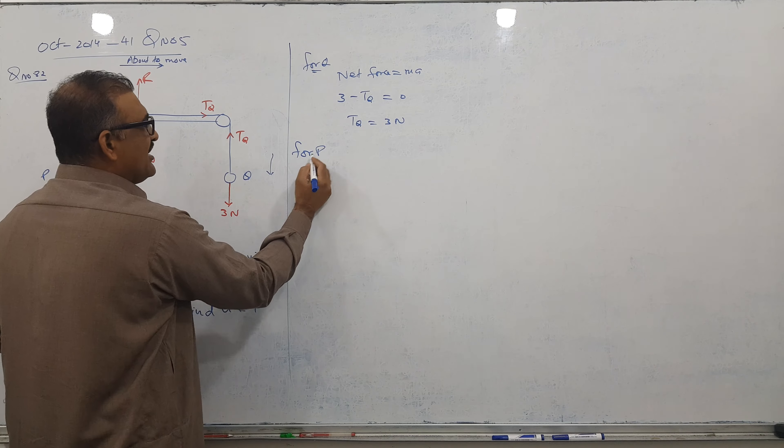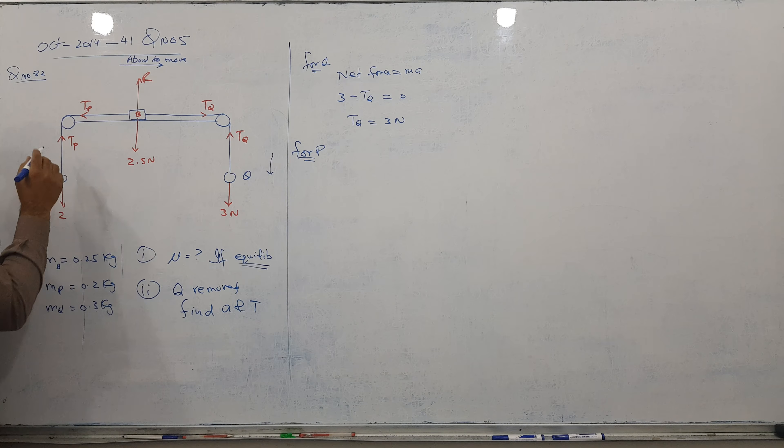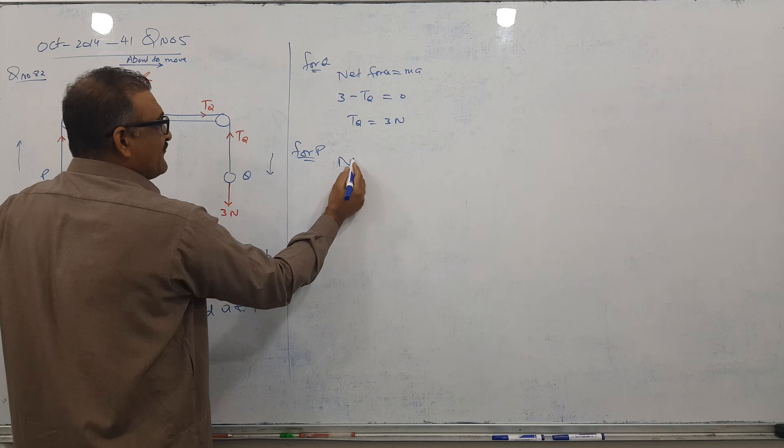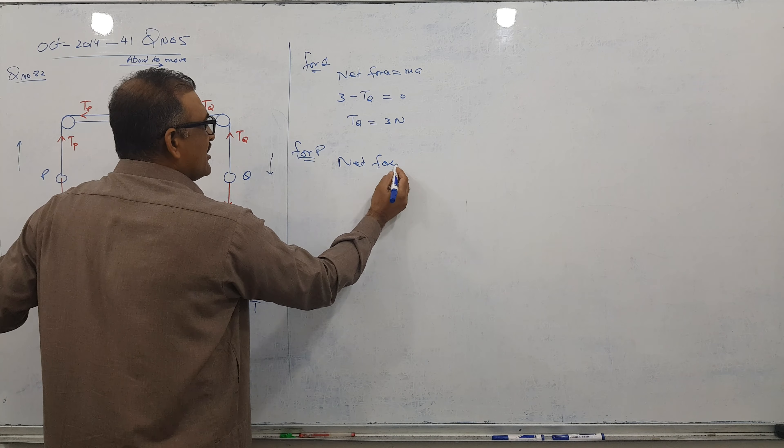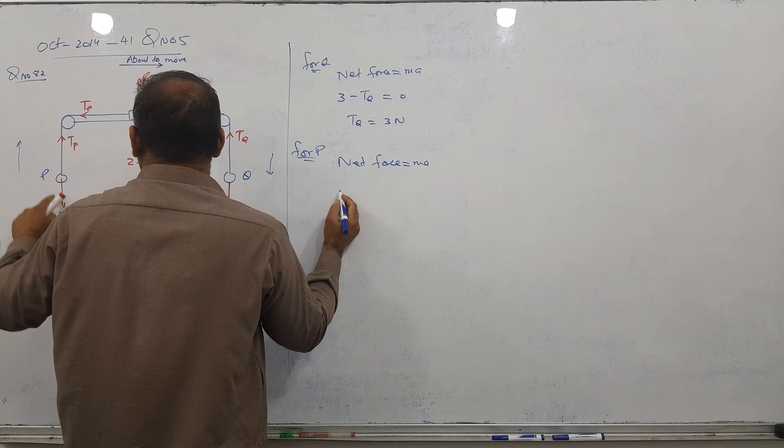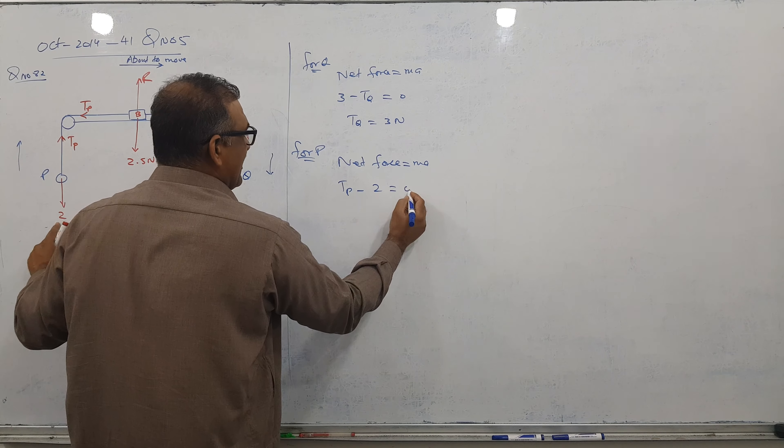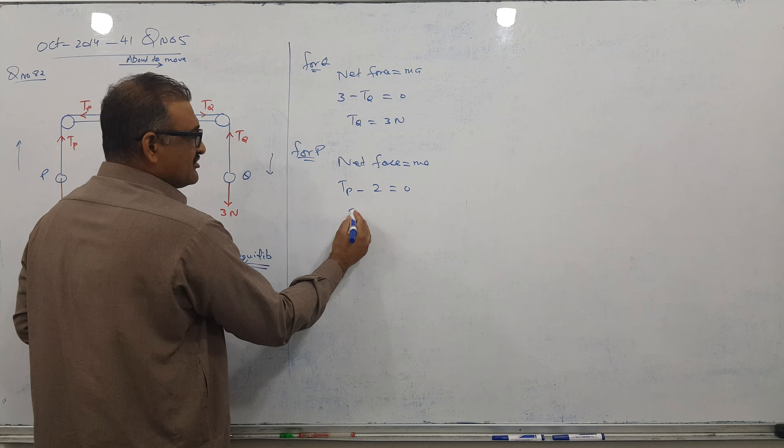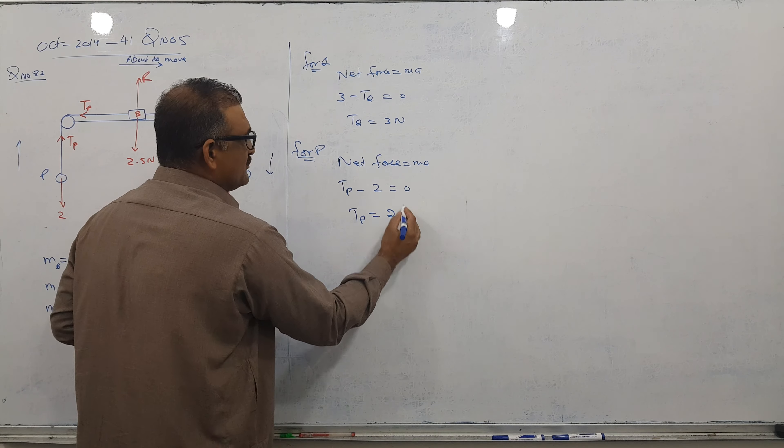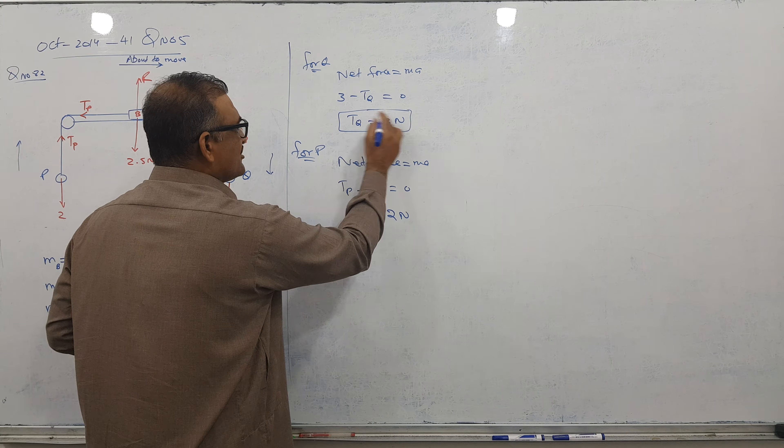Similarly, I go for P. So for P, about to move this way. So I can say this minus this equal to 0. Again, straight formula, net force equal to Ma. Tension P minus 2 equal to Ma, that is 0 acceleration. So tension P becomes 2 Newtons. So I got both tensions clear.